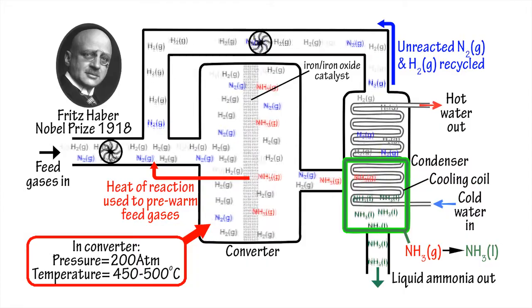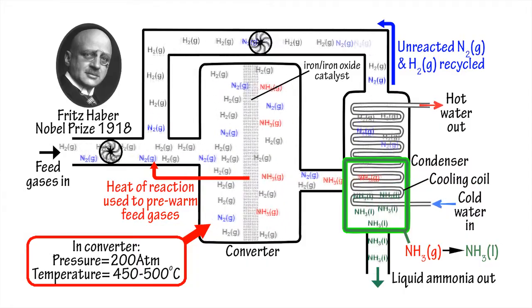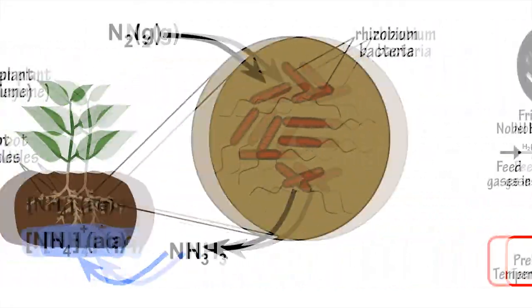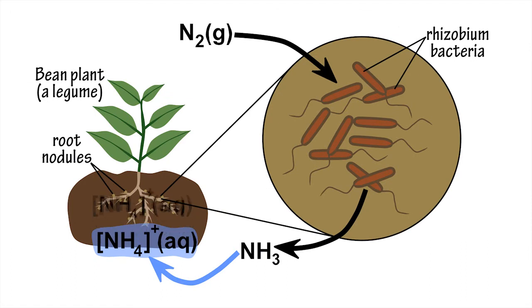Fritz Haber won the Nobel Prize for Chemistry for his efforts, but if you think he was clever, consider the humble rhizobium bacteria, which are found in the root nodules of legumes and contain an enzyme that can convert, or fix, atmospheric nitrogen into ammonia at much lower temperatures and pressures. Now why doesn't someone nominate them for a Nobel Prize?